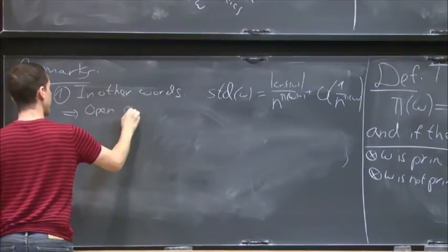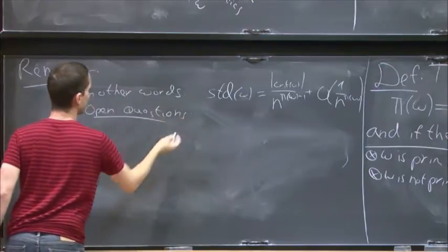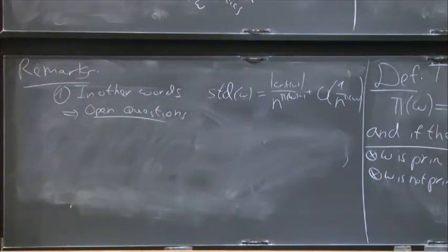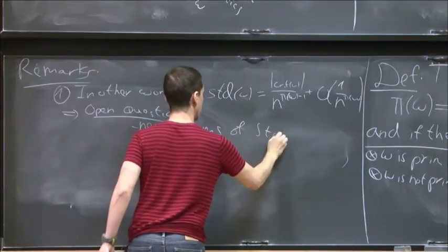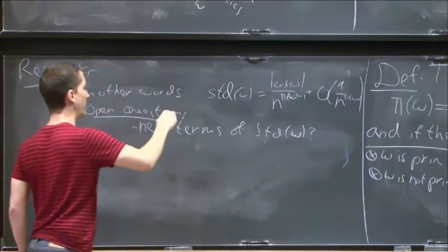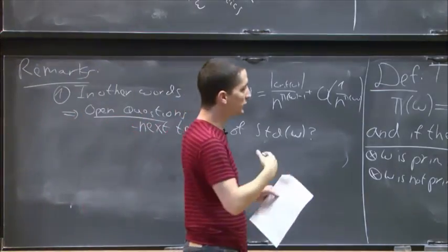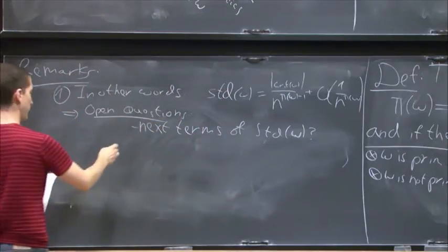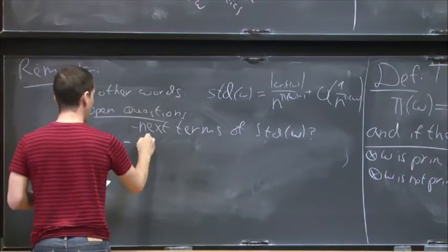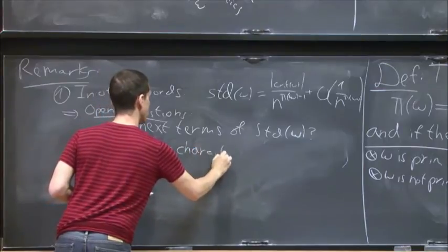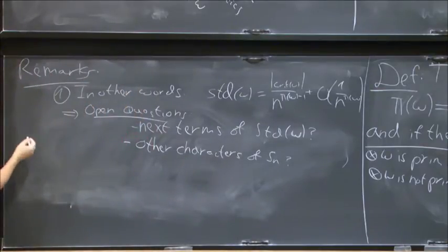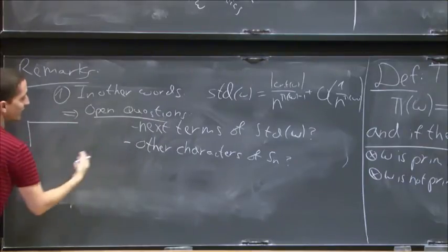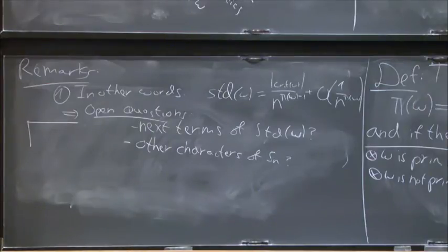Open questions: What are the next terms in the Laurent series expansion? We still don't know. And obviously you also want to ask about other characters of Sn. The standard character is one character; Sn has different characters for each N. These are related open problems I don't think people have tried to work on hard, and at least some of them should not be much harder than what I present here.